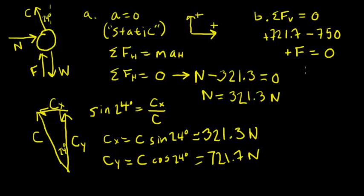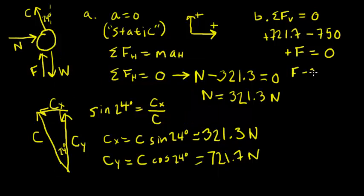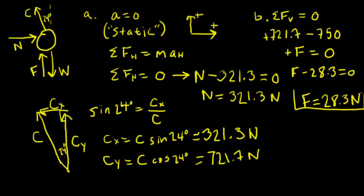So if I add these together, I will get F minus 28.3 equals zero. And that is going to lead us to F is equal to 28.3 newtons. And that is our solution for part B. And that is how we solve example 4.4.